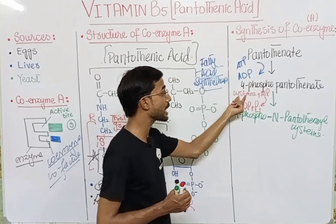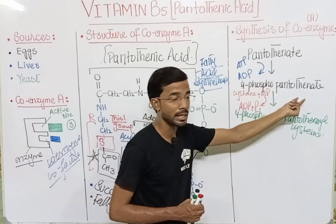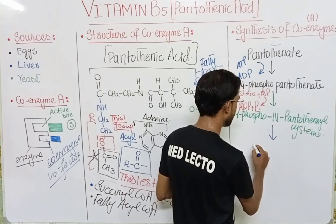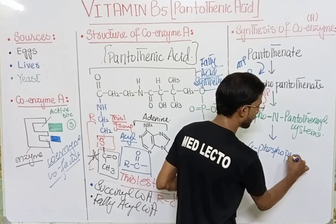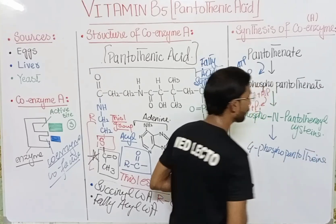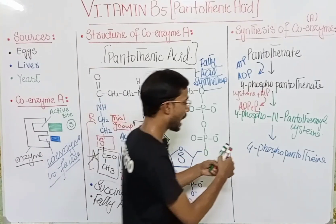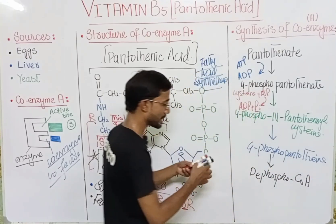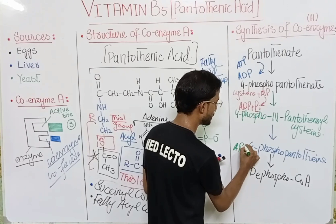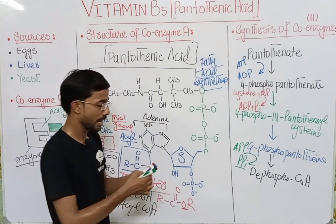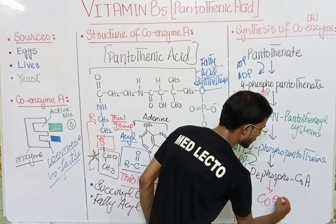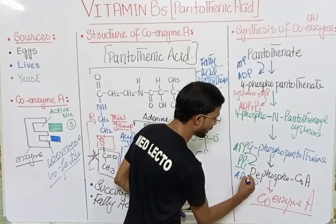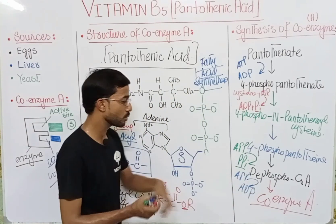ATP is required for the attachment of cysteine to 4-phosphopantothenate, and all the components of ATP will be released from the reaction. After that, you will see the formation of 4-phosphopantothenol. Then the formation of dephospho-CoA occurs, with ATP transferring and releasing only inorganic phosphate. In the last step, the formation of Coenzyme A occurs, where ATP converts to ADP as one phosphate is given to dephospho-CoA.